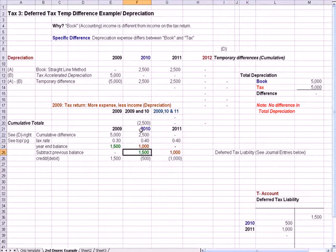And so, for 2010, when I do cumulative difference and I subtract out the prior year, I end up with a debit, a deferred tax asset of $500. This is linked as a debit, an asset.